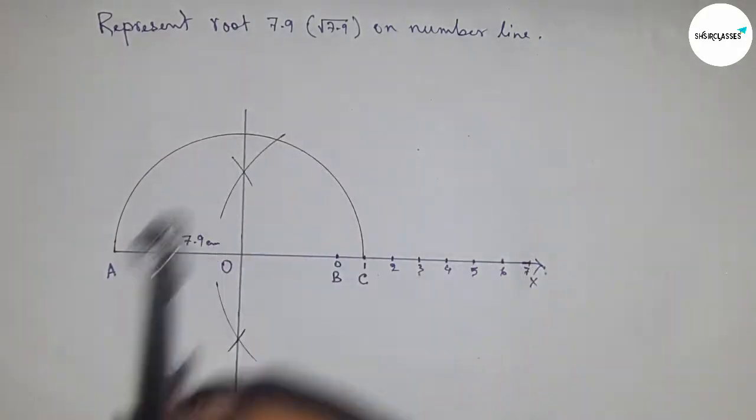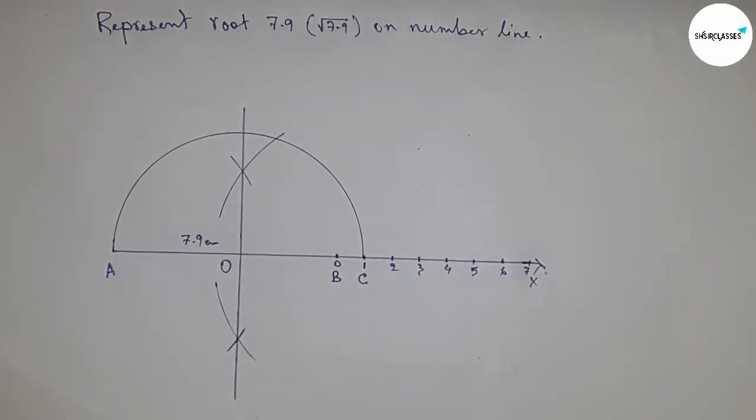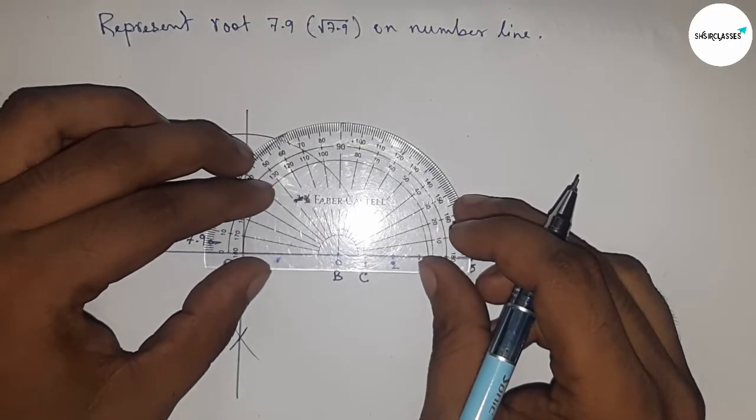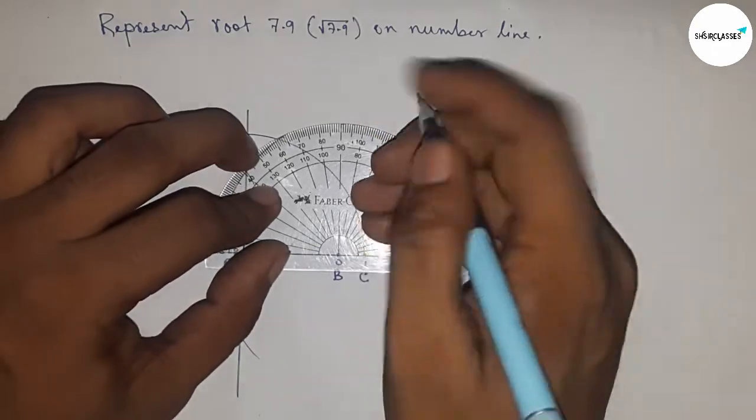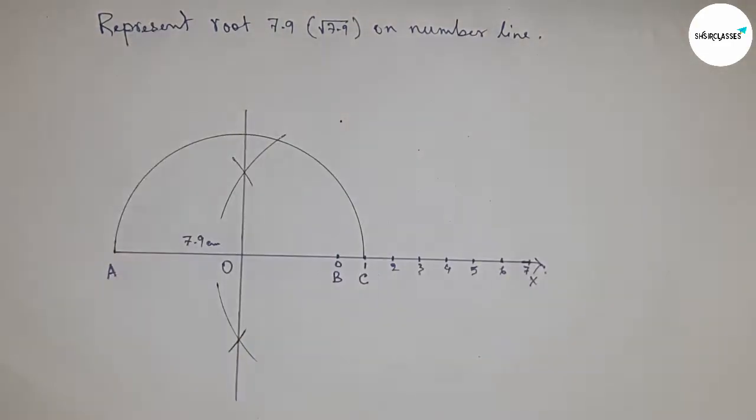Now construct a 90-degree angle at point B by using a protractor. This is 90 degrees.